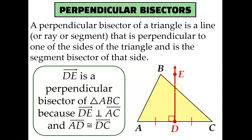For example, ray DE is a perpendicular bisector of triangle ABC because DE is perpendicular to AC — that's the perpendicular part of perpendicular bisector — and it also intersects AC at its midpoint. You can see that AD and CD are marked as congruent, so D is the midpoint, and ray DE is a ray that intersects AC at its midpoint. That makes it a bisector.